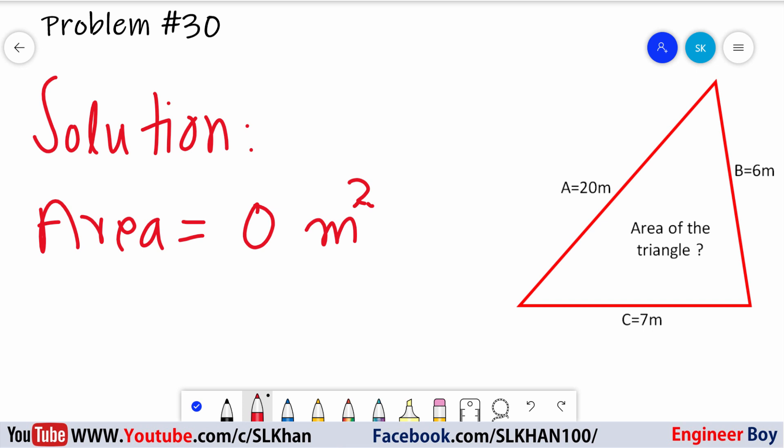There is a simple rule: when you add two sides of the triangle, that must be greater than the third one. A plus B must be greater than C, B plus C must be greater than A, and A plus C must be greater than B.